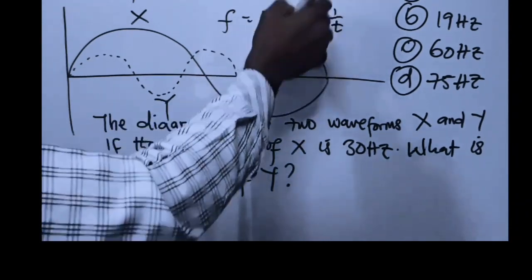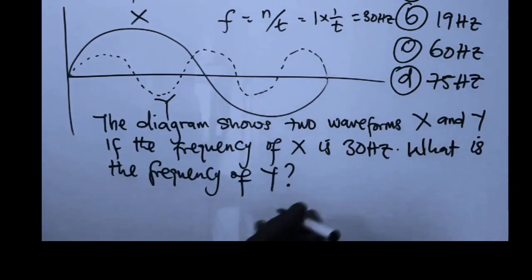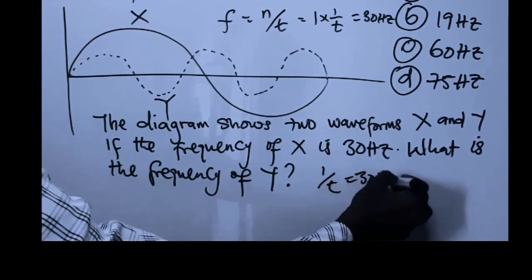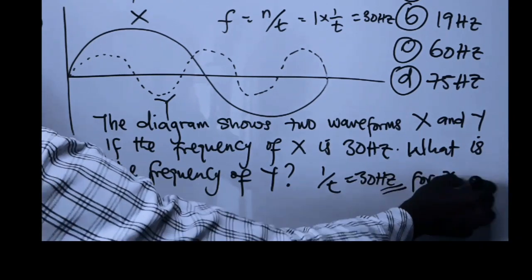So it simply means that we're going to have one over t. The number of cycles is one, so we multiply by one over t, and this equals 30 hertz. That is what is given from the question. So, in other words, I can say one over t equals 30 hertz. That is for x.